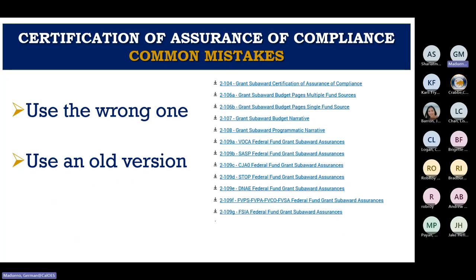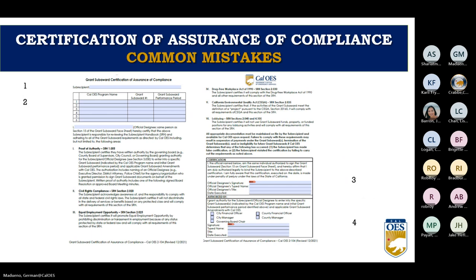For the Certification of Assurance of Compliance documents, a common mistake is signing and submitting the wrong one. You must receive the one tied to the fund source of your program — the checklist in Part Three of the RFP will tell you exactly which one is needed. Using an old version is another common mistake; always download from the website. Please read the document in full because when you sign it, you certify that you are compliant.